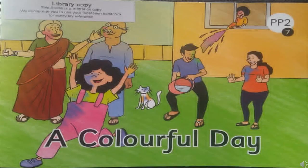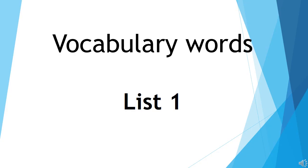Children, in part 3 of this video, we are going to see vocabulary words list one from the story, A Colorful Day. We will remember one thing: vocabulary words and sight words are not to be decoded — they are to be read as whole words. You have already read the story A Colorful Day, and today we are going to do vocabulary words from this story. Let's see vocabulary words, list one.